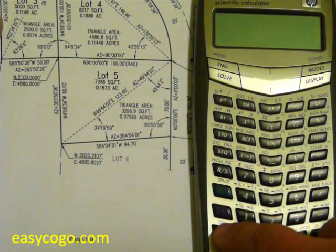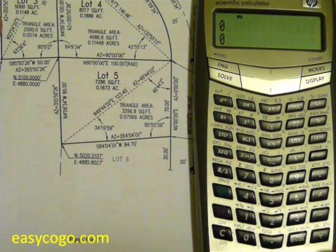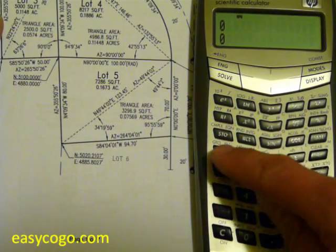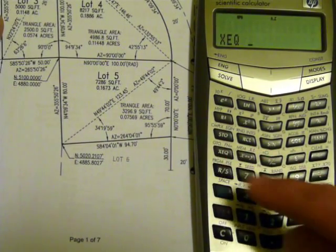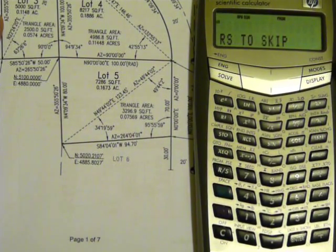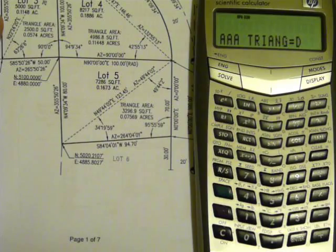In order to solve any triangle, we can easily use the menu to find the appropriate triangle for the values that we know. So we can go execute M for menu, it tells us RS to skip, one RS to select.